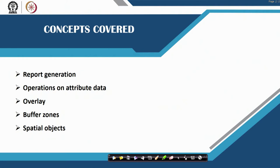The first thing I would like to look at is how you do report generation, then what are the different operations on attribute data, how you perform operations on attribute data, some aspects of overlay, buffers and spatial objects. Overlay and buffers form a very basic part of spatial operations, so let us look at them in detail, and finally I would end this class with spatial objects.